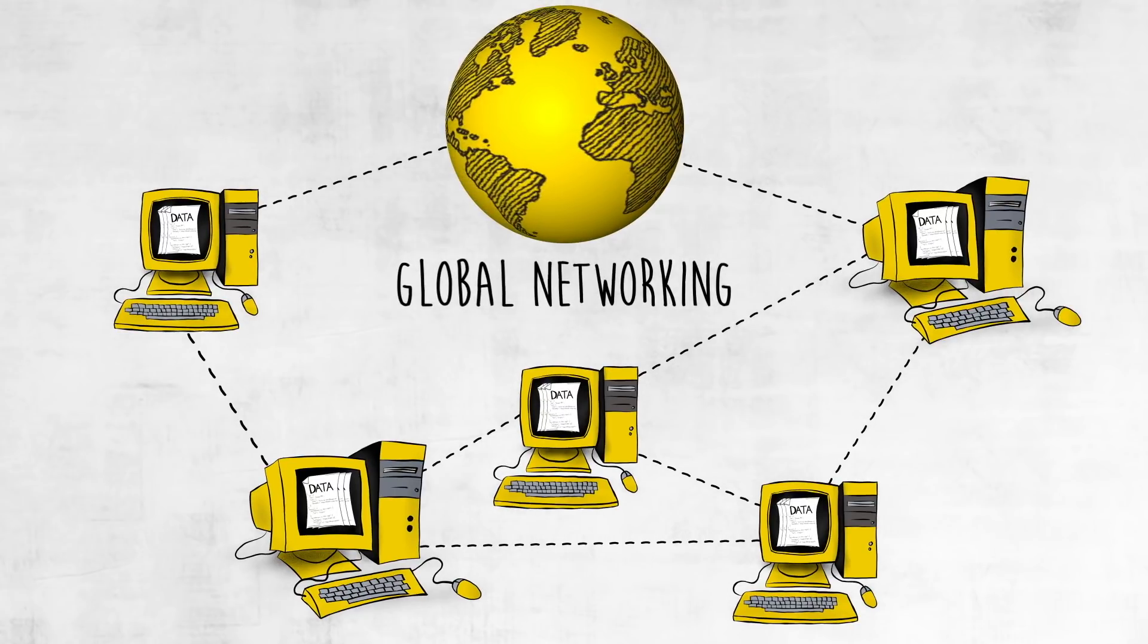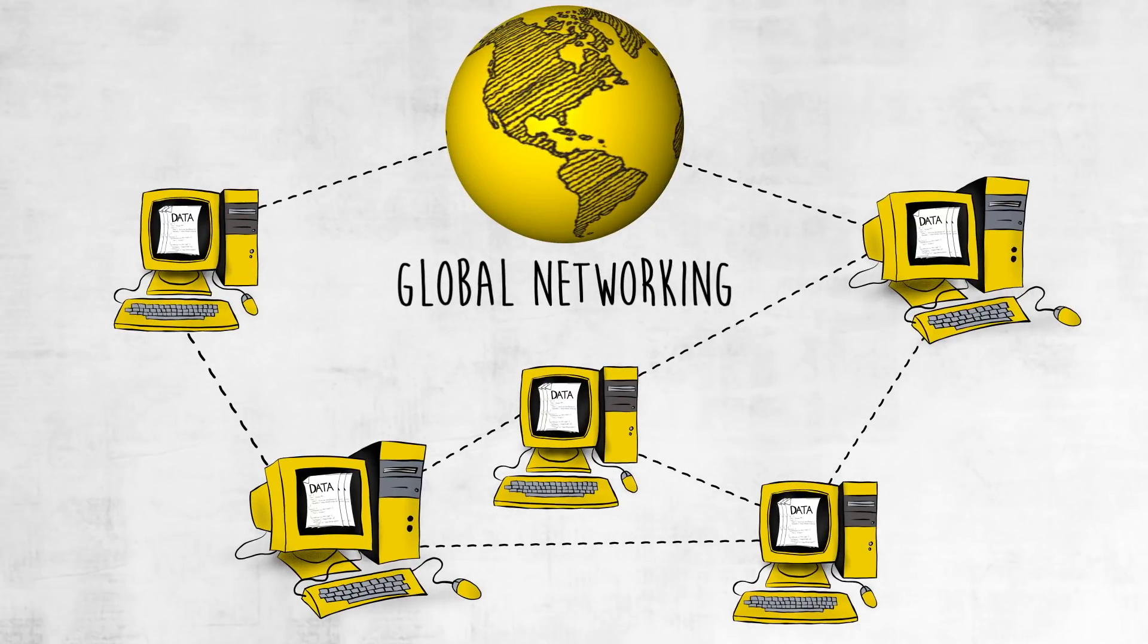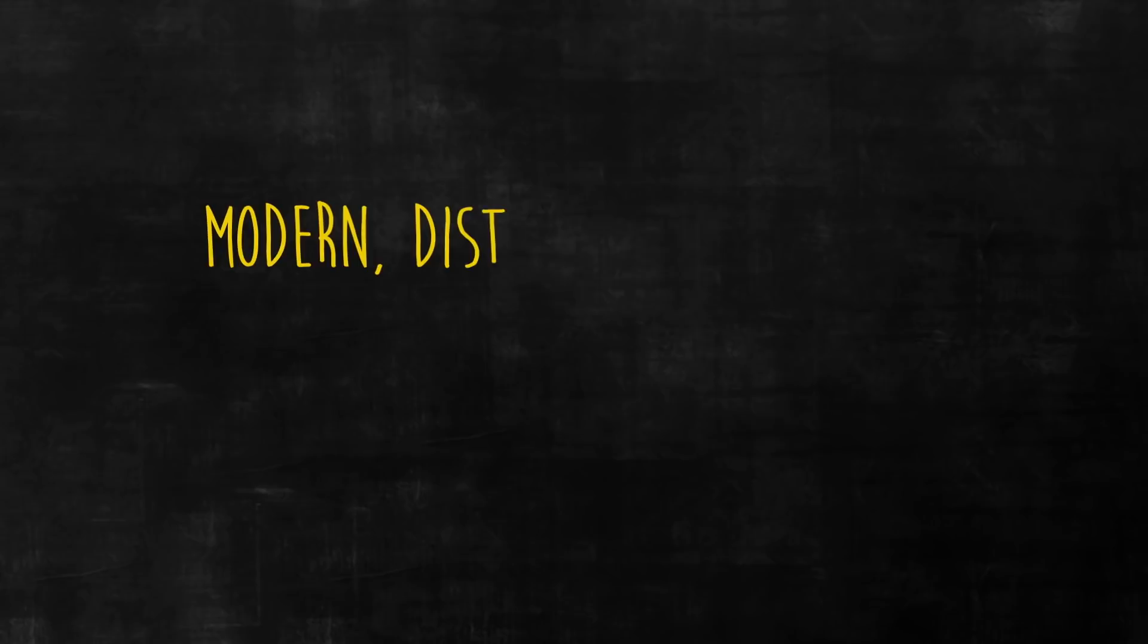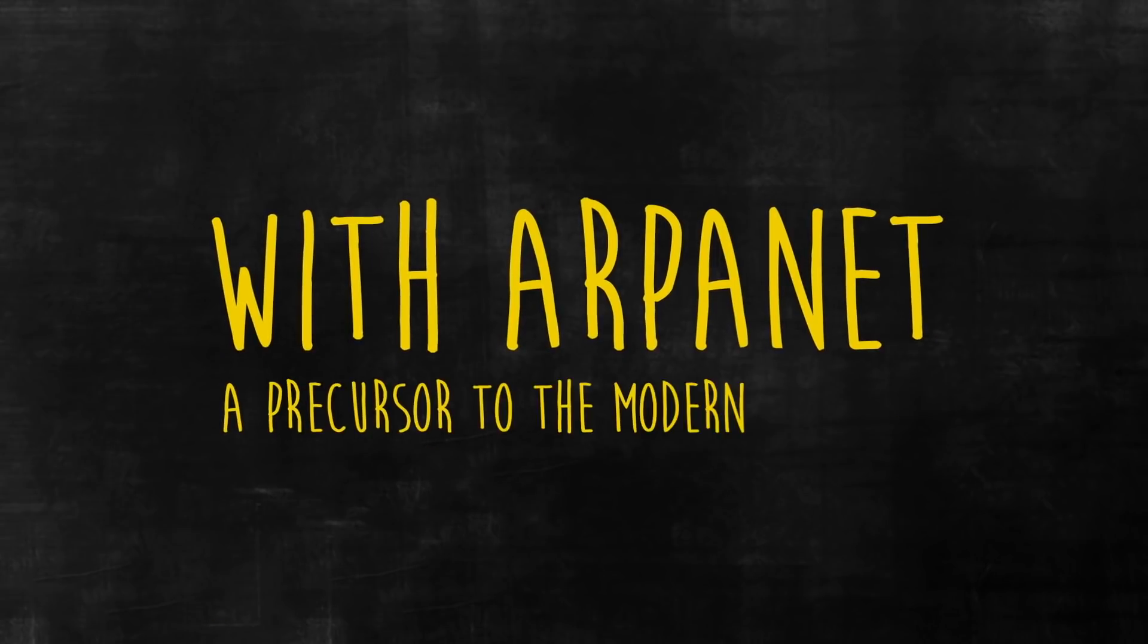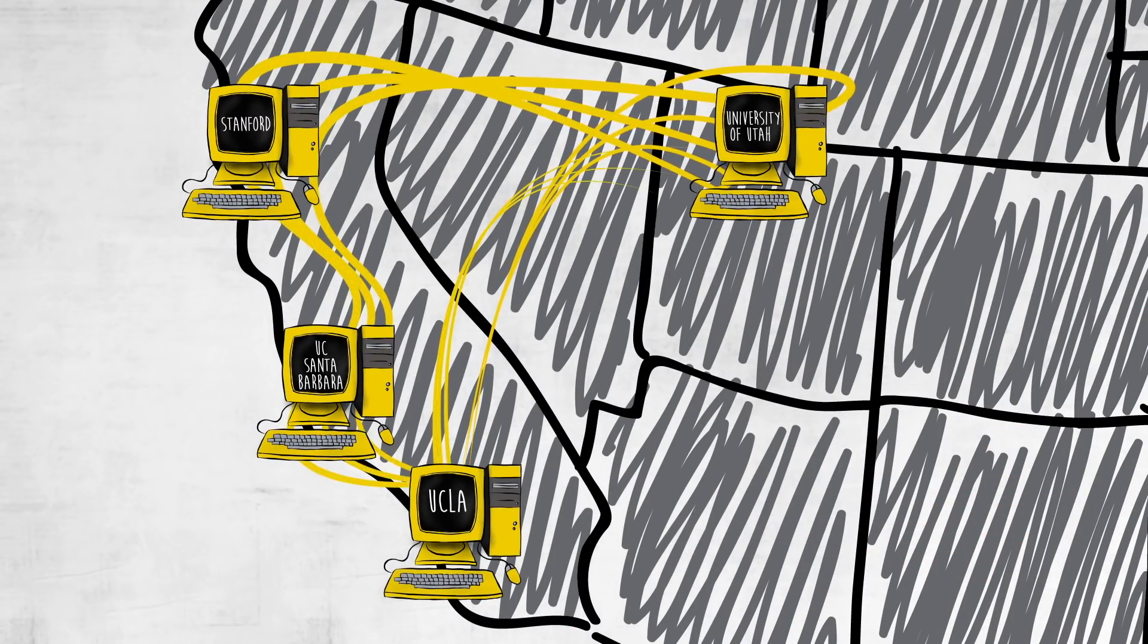In fact, the capacity for global networking itself is at the very core of how blockchain works. Modern distributed computer networks began in the late 1960s with ARPANET, a precursor of the modern internet, which connected computers at research universities out west.